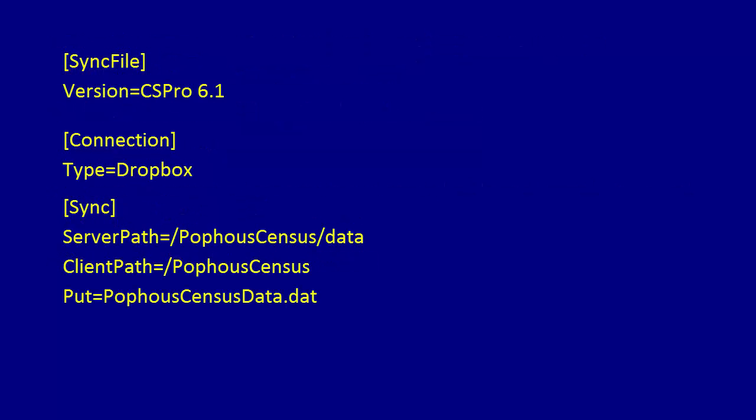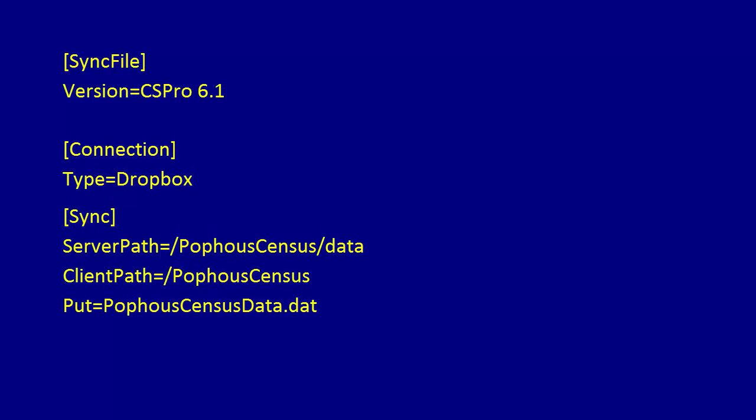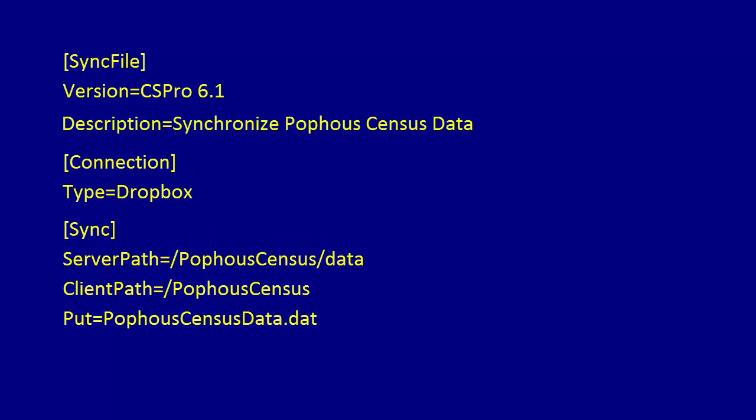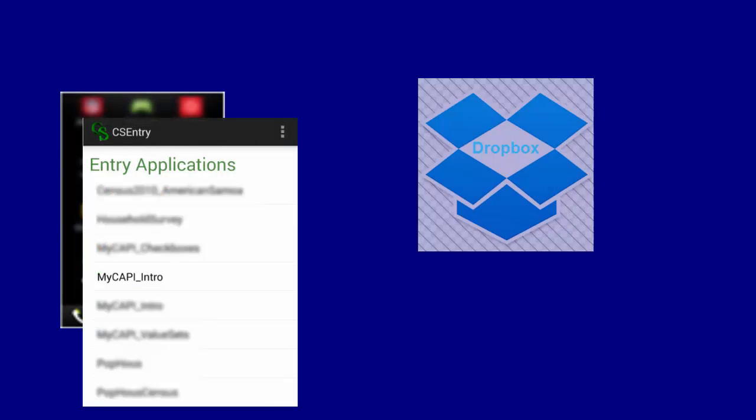In the first section of the file, we can also add a description — for example, 'Synchronize Pop House Census data.' This description will be displayed on the screen while performing synchronization. This will be illustrated in the upcoming example. In this example, we will synchronize the myCAPI-intro application with Dropbox.